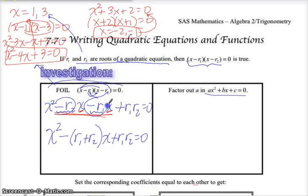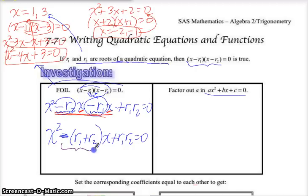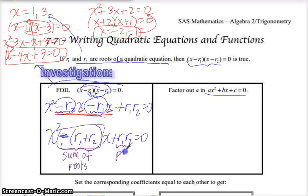This negative r₂ and negative r₁ — I factored out the negative. So if I redistributed it, both of these would be negative, so when I put it in parentheses I had to make it positive. This right here is the sum of the roots — it's the coefficient. It's the negative and then the sum of the roots. And this right here is the product of the roots. So we take the opposite of the sum — that negative sign is important — and here's the product.